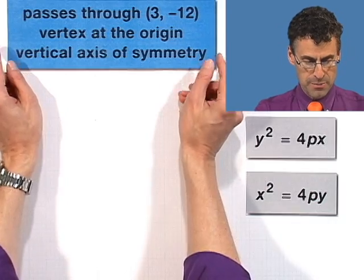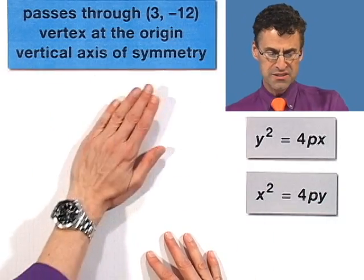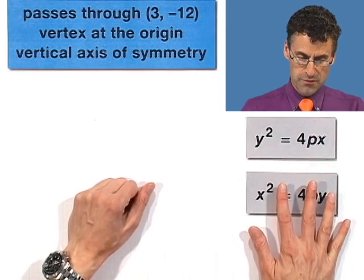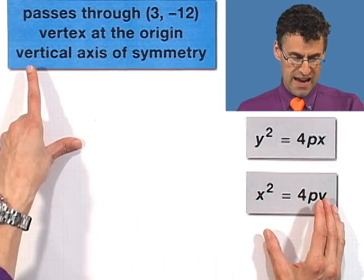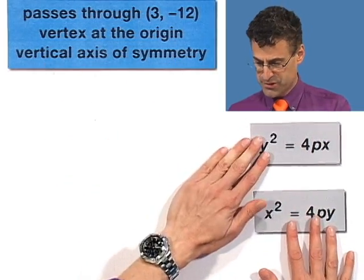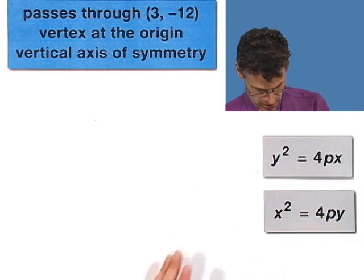Okay, here's a parabola. And we're told that it passes through the point 3 comma negative 12. Vertex at the origin and vertical axis of symmetry.